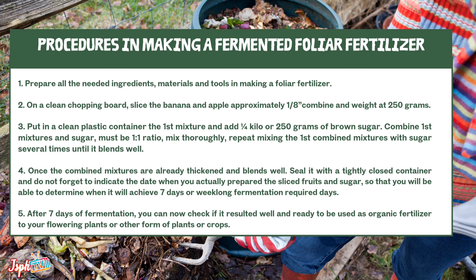Mix the combined mixture with sugar several times until it blends well. Once the combined mixtures are already thickened and blend well, seal it with a tightly closed container and do not forget to indicate the date when you actually prepared the sliced fruit and sugar mixture, so that you will be able to determine when it will achieve the 7-day fermentation required. After 7 days of fermentation, you can now check if it is ready to be used as organic fertilizer for your flowering plants or other forms of plants or crops.